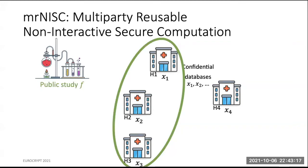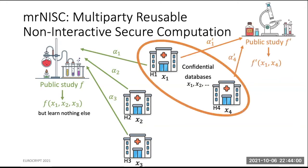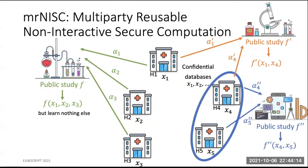For instance, parties one, two and three can come together and decide that they want to perform some study on their joint inputs and learn some function f on their respective inputs. We can imagine that this is done by a single message sent from each of the parties to the public evaluator — think of these messages as some magical encoding of the database. At a later stage, some other subset of parties may want to perform another computation, and new parties may even join the game and compute something together with existing parties.